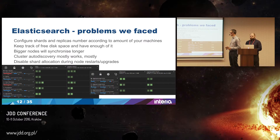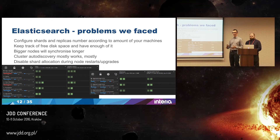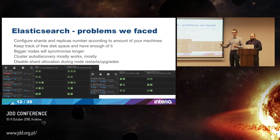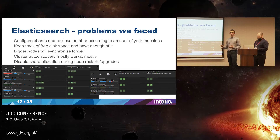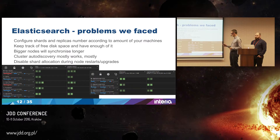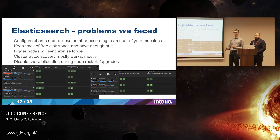There is one gotcha during node updates. When you restart a single node, the Elasticsearch cluster will start migrating shards from that node to the rest. If you want to update servers one by one, this could take a really long time because all data synchronizes across the cluster. To handle this, you have to disable shard allocation. There is a small button in the Kopf plugin for Elasticsearch — you just click it and it won't migrate data during restart. After restart, it checks which indexes didn't change and uses them to synchronize faster.